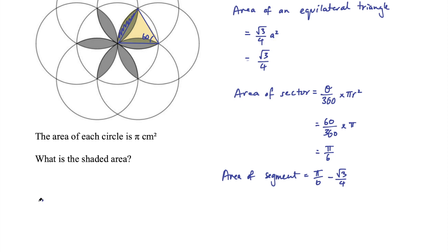So the shaded area will equal 12 times (π/6 - √3/4).